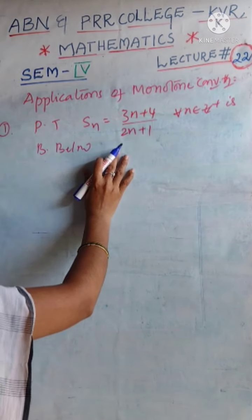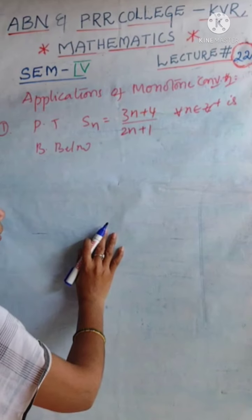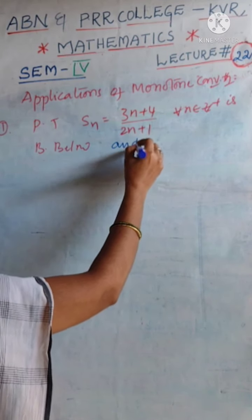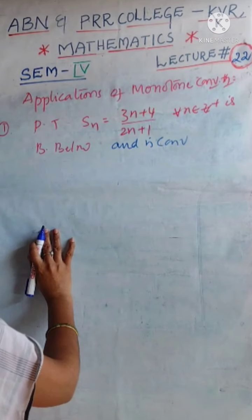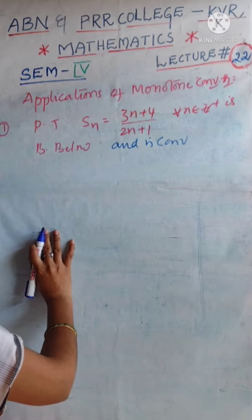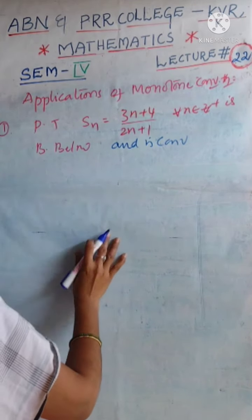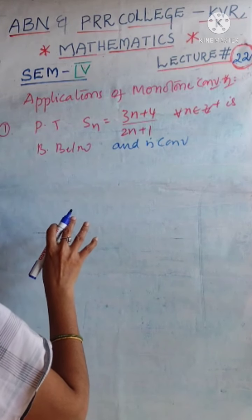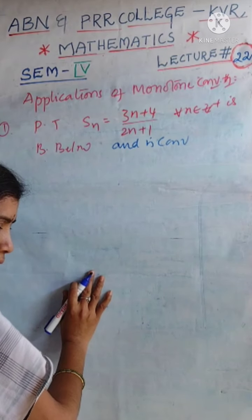Here the question is: prove that the sequence Sn = (3n + 4)/(2n + 1) is bounded below and is convergent. What does the Monotone Sequence Theorem say? Whenever a monotone sequence — whether it is increasing or decreasing — is bounded, then we can easily say that it is convergent.